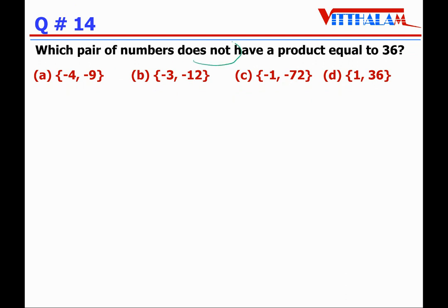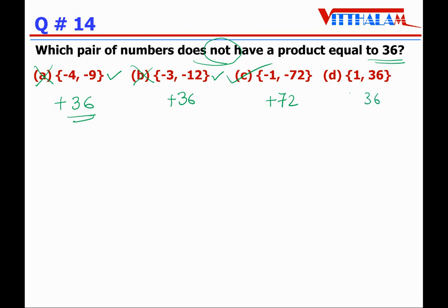Question 14: Which pair of numbers does not have a product equal to 36? Option A: minus 4 times minus 9 — both negative, product is positive 36. Not the answer. Option B: minus 3 times minus 12 — product is 36. Not the answer. Option C: minus 1 times 72 — product is 72, not 36. This is our answer. Option D: 1 times 36 equals 36. Not the answer. So the answer is C.